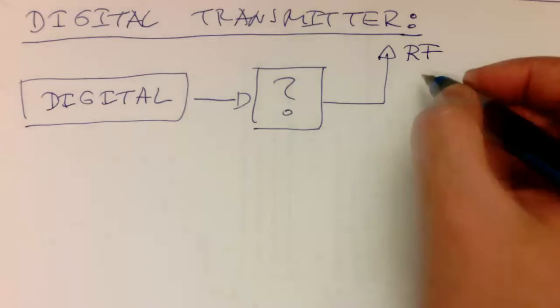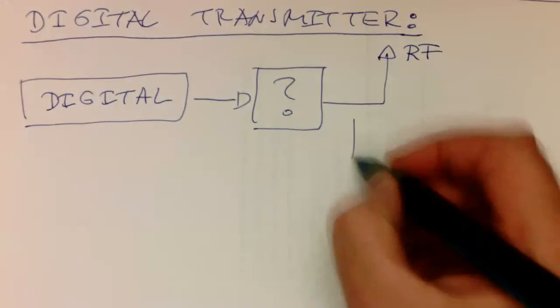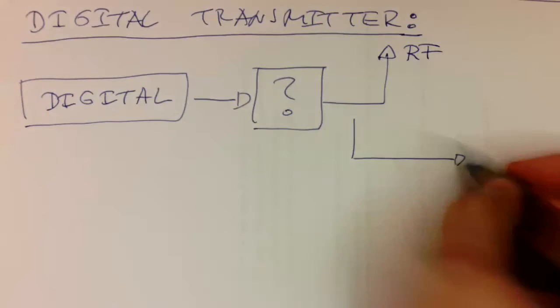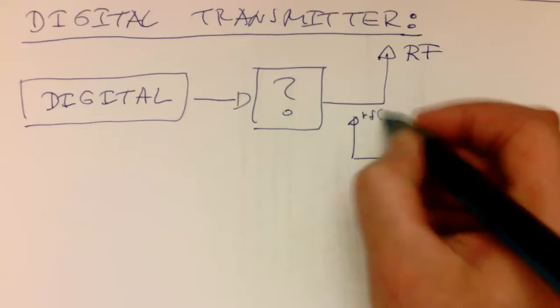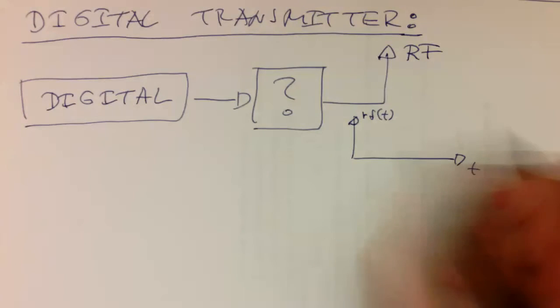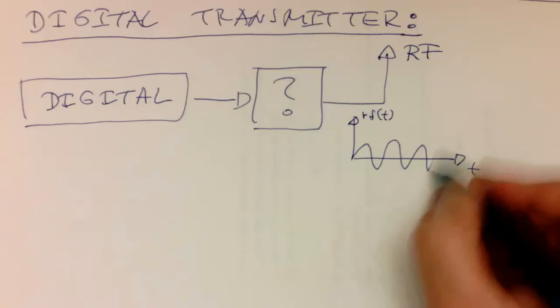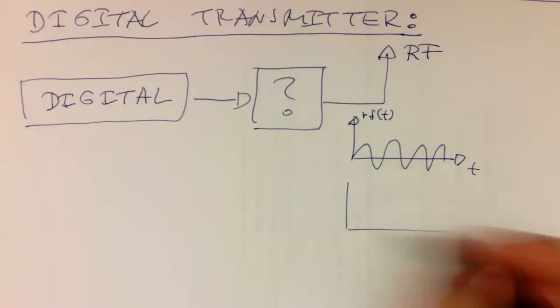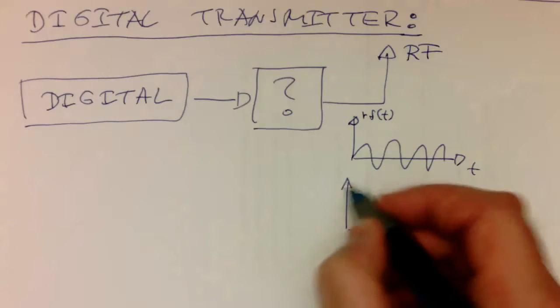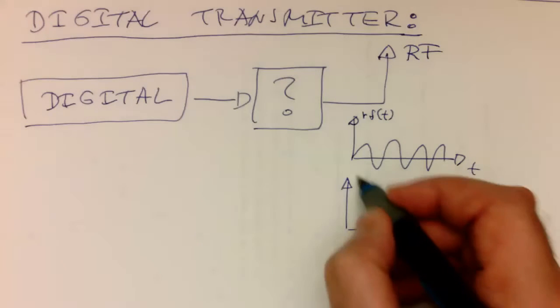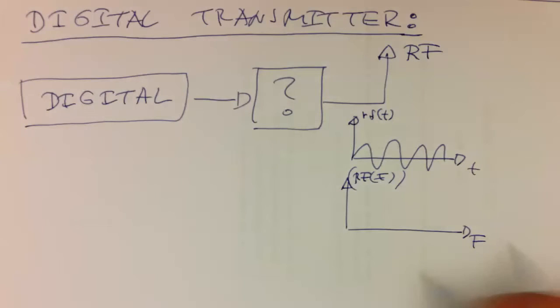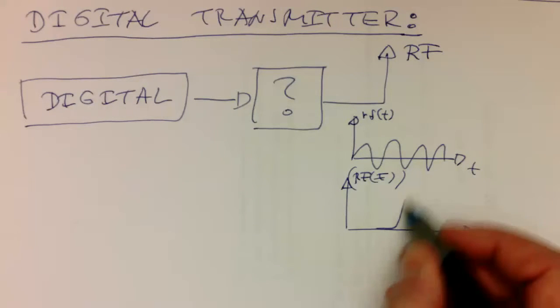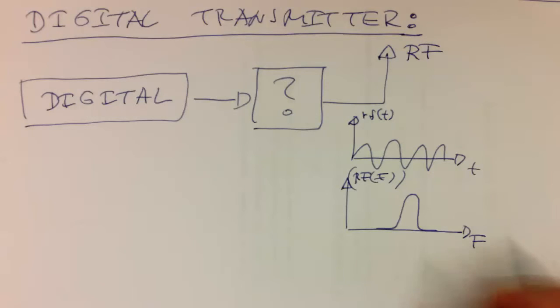And the RF has usually the characteristic that it has a certain carrier frequency here. So if we call this RF of t, then this looks probably something like this. And in the frequency domain, so if we call this RF of f, and this is our frequency, then this will look like this, that we have here a certain bandwidth.